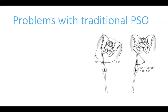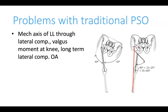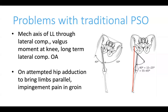However, there are a few problems with the traditional pelvic support osteotomy. After PSO, if you draw the mechanical alignment of the lower limb, you will see that the mechanical axis passes well lateral to the center of the knee joint. This increases pressures in the lateral compartment and can predispose to lateral compartment osteoarthritis. Also, the distal fragment is in valgus, so if the patient tries to adduct the limb to bring both limbs parallel, it results in groin impingement with pain.